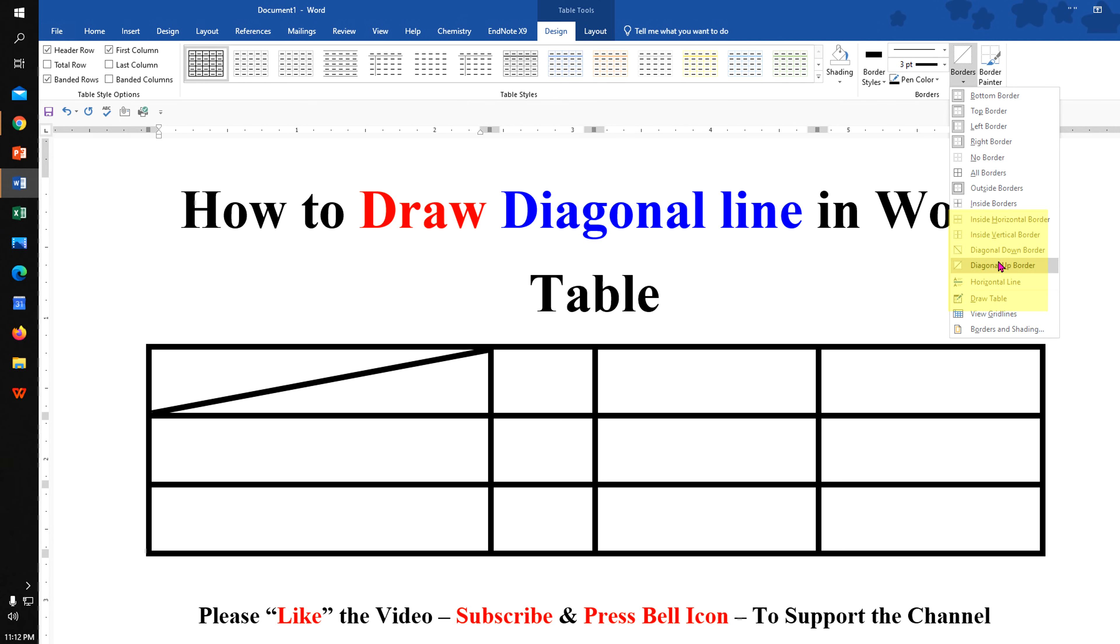Now the big question is how to type above and below. As you can see, if we type anything it is at the center of the cell. So to solve this problem, align to the left first, type what you want.